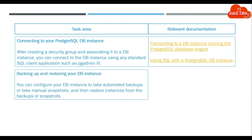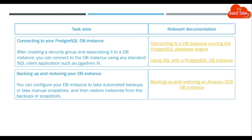Backing up and restoring your DB instance. You can configure your DB instance to take automated backups, or take manual snapshots, and then restore instances from the backups or snapshots. See: Backing up and restoring an Amazon RDS DB instance.